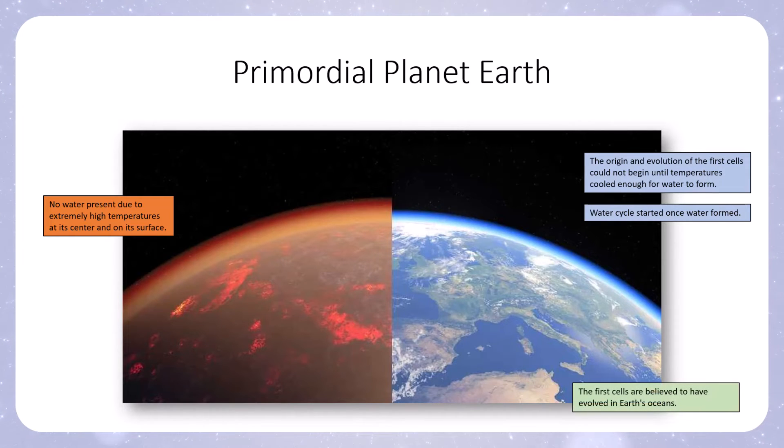The first cells are believed to have evolved in earth's oceans. Once the water was formed and the gravitational pull of our current planet allowed the liquid water to remain at the surface and not float away, it gave rise to actual bodies of liquid water like lakes, ponds, and oceans. Those oceans acquired all of the necessary nutrients and minerals to give rise to those first cells, which we know were prokaryotic.